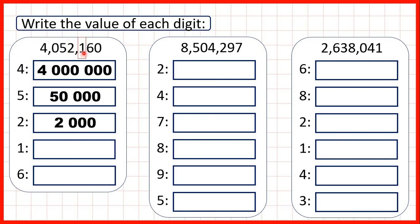The one is in our hundreds place value so that represents one hundred. The six is in our tens so that stands for sixty. Now we also have zeros in this number, but here we didn't need to write the value of the zeros, and that's because whatever place value they're in, the value of the zero is always zero. So this zero here is in our hundred thousands place value, but because zero times a hundred thousand is still zero, the value of the digit is still zero.